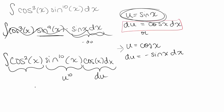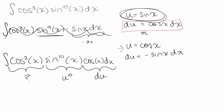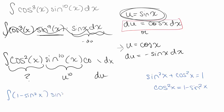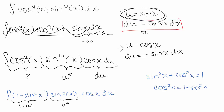Now we're left with the cosine squared, and if we wanted to convert everything to u's, we have a problem because we don't know how to convert cosine of x to u. But thankfully, here is where the trick comes in. We do know the Pythagorean identity: sine squared of x plus cosine squared of x equals 1. This allows us to rewrite cosine squared as 1 minus sine squared. So using that to rewrite our integral, we get 1 minus sine squared times sine to the tenth of x times cosine of x dx. This allows us to make the substitution: 1 minus sine squared becomes 1 minus u squared, sine to the tenth becomes u to the tenth, and cosine of x dx becomes du.